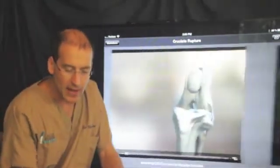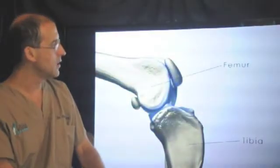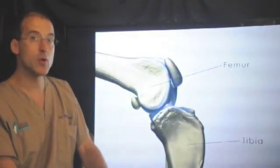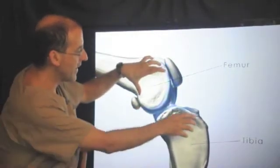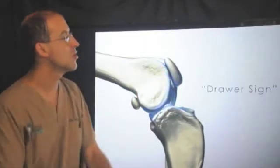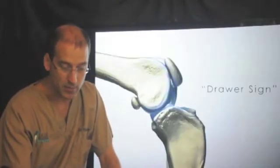The way we diagnose a cruciate ligament tear is with a particular manipulation called cranial drawer, and I'm going to show that here. The two bones above and below the knee joint, the femur and the tibia - if I put my hands above and below and I can elicit this type of manipulation called a drawer sign, it is conclusive for a cruciate ligament tear. In a complete tear it can be a very easy diagnosis to make. In a partial tear it can be more challenging in some situations.